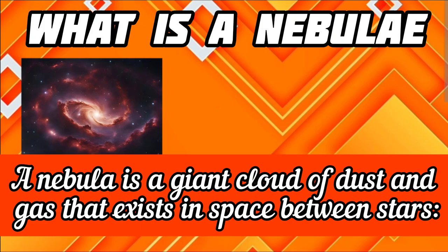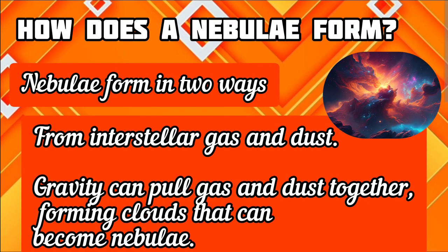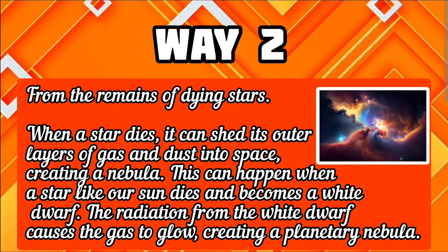How does a nebula form? Nebulae form in two ways. Way 1: from interstellar gas and dust — gravity can pull gas and dust together, forming clouds that can form nebulae. Way 2: from the remains of dying stars. When a star dies, it can send its outer layers of gas and dust into space, creating a nebula.